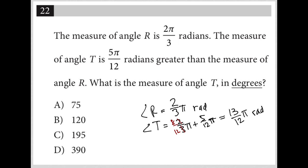What is the measure of angle T in degrees? Okay, so I have the measure of angle T in radians. So radians to degrees. Now we're going to do some conversion. π radians, so I'll put π under the radians, is equal to 180 degrees.